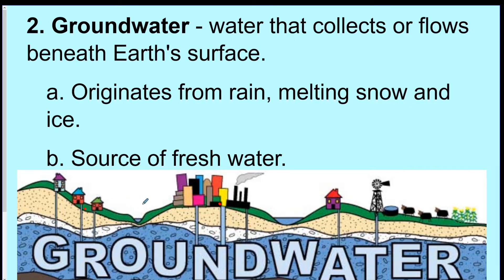We pump the water up from the ground. Obviously, if we pump a lot of water up, the groundwater — the water table, which is the top of the groundwater — is going to sink. And if we have a lot of rain, it's going to go up and refill. We count on rain and all our sources of groundwater to refill the water table.